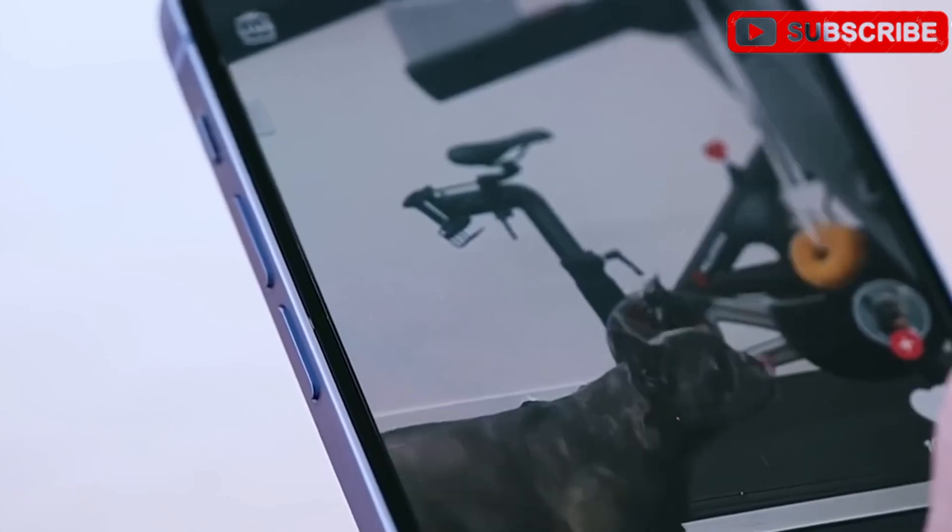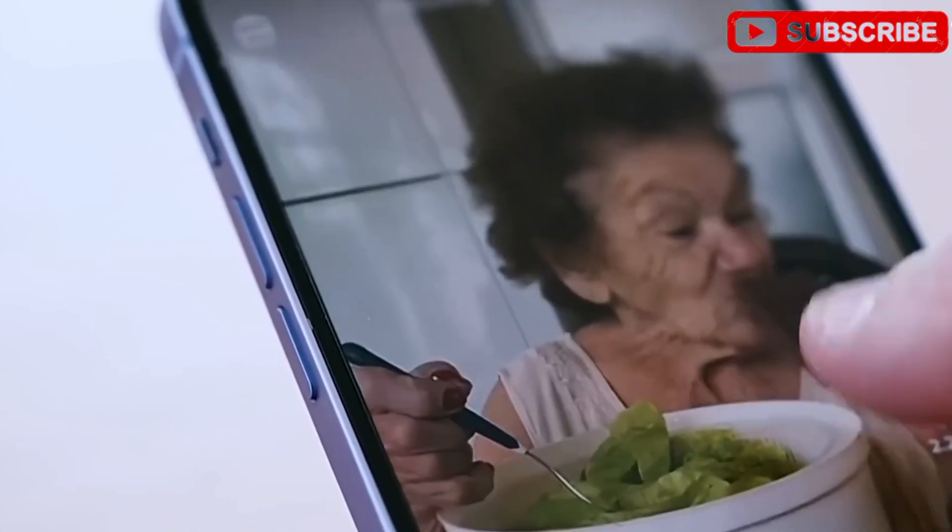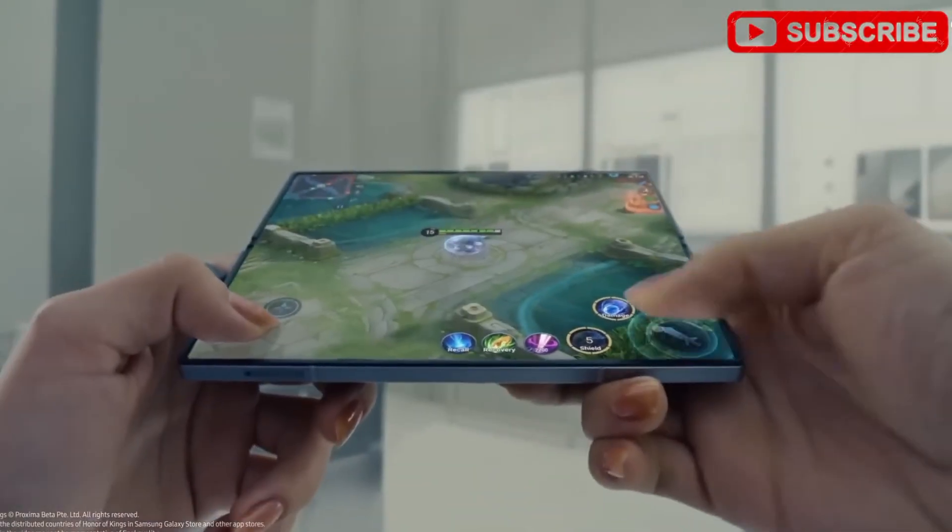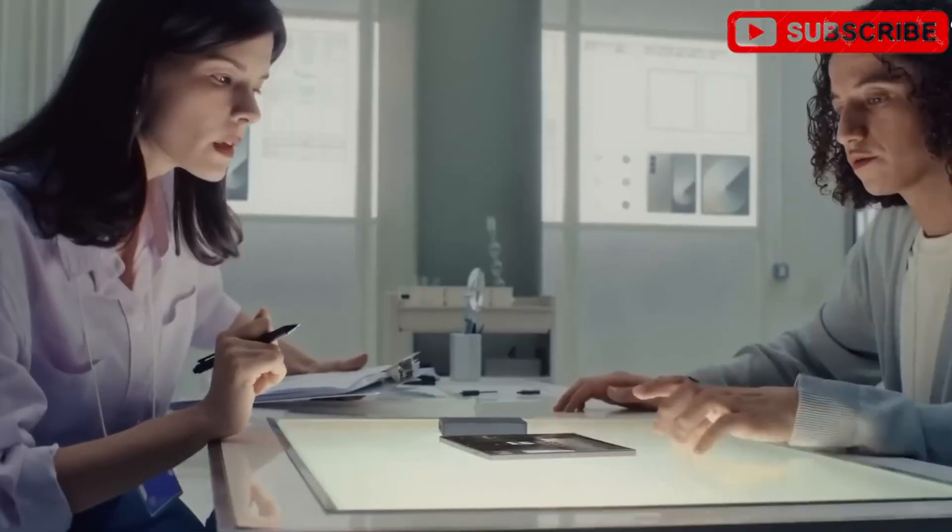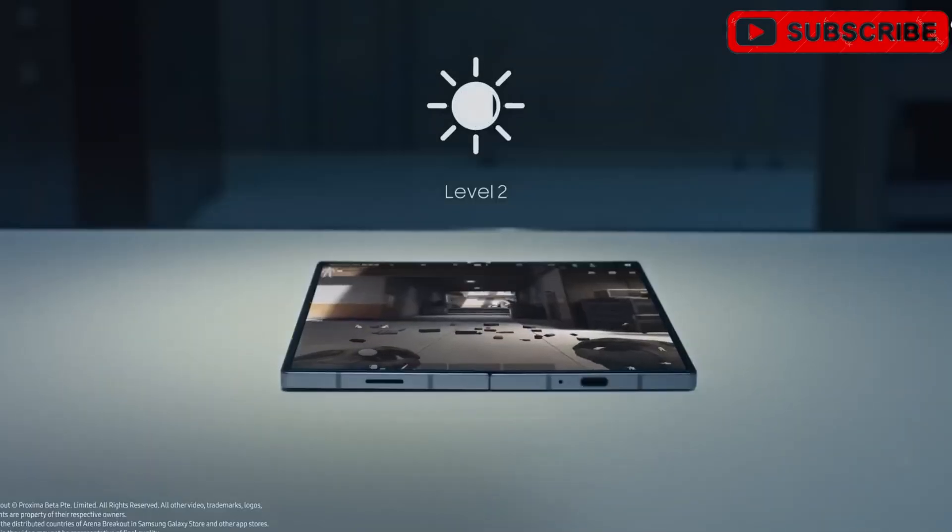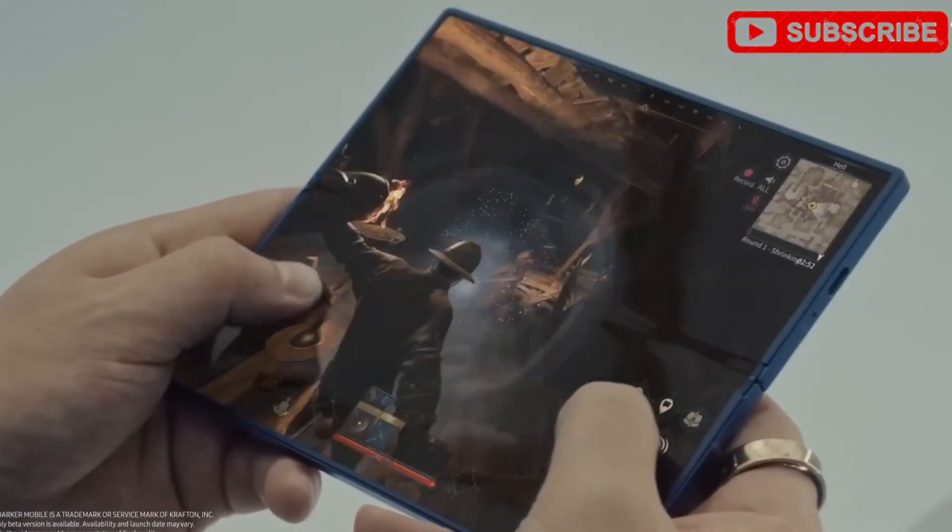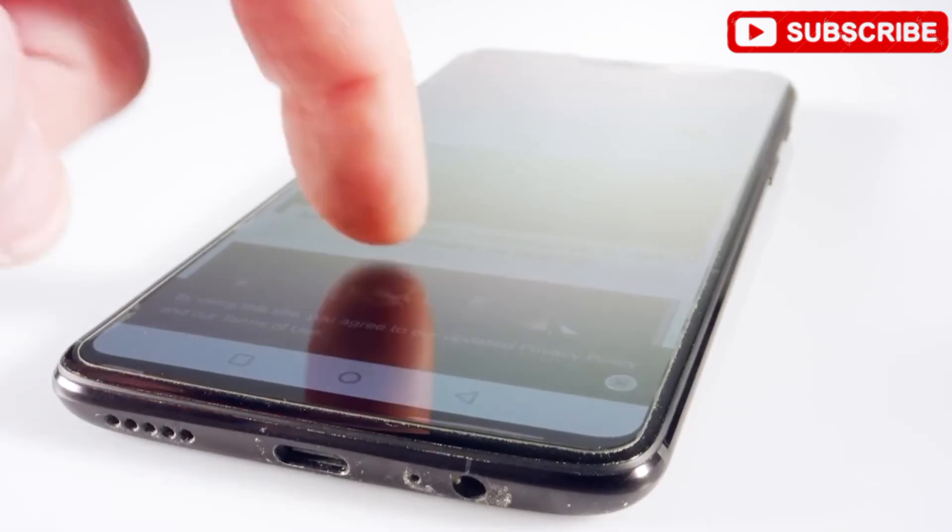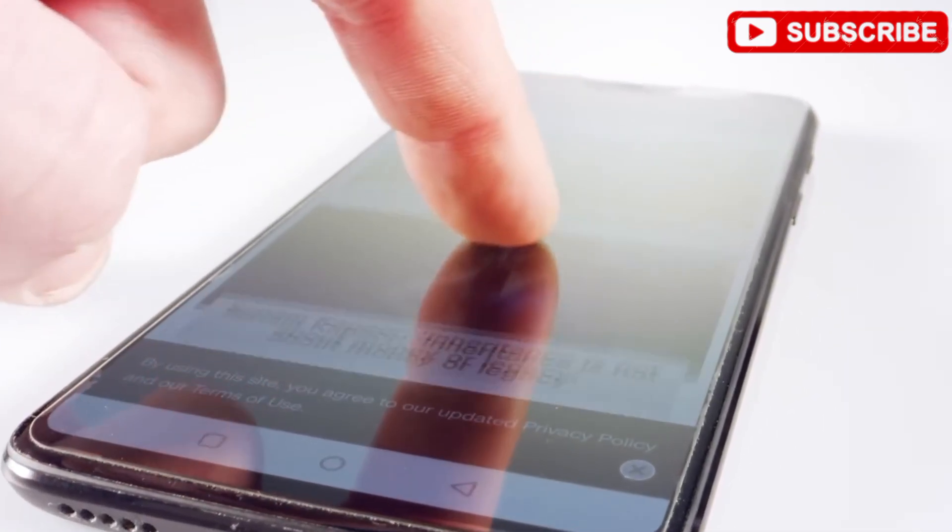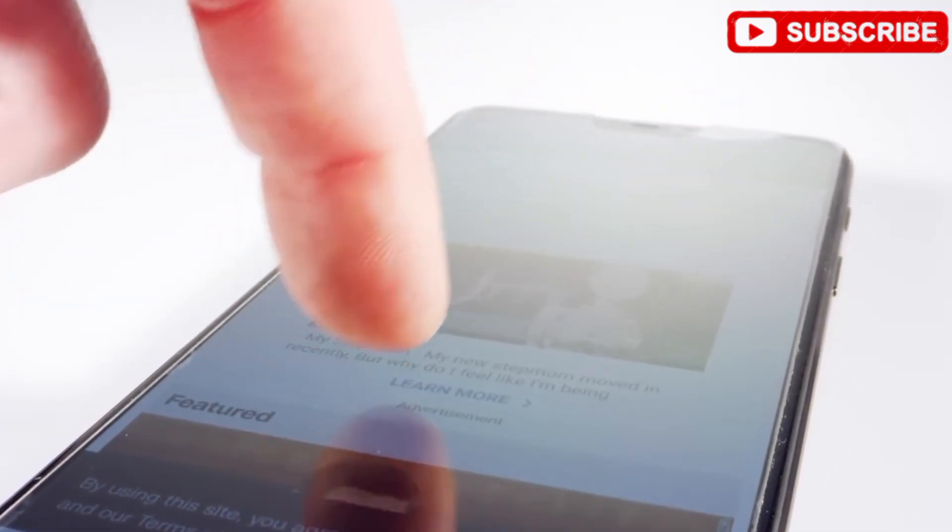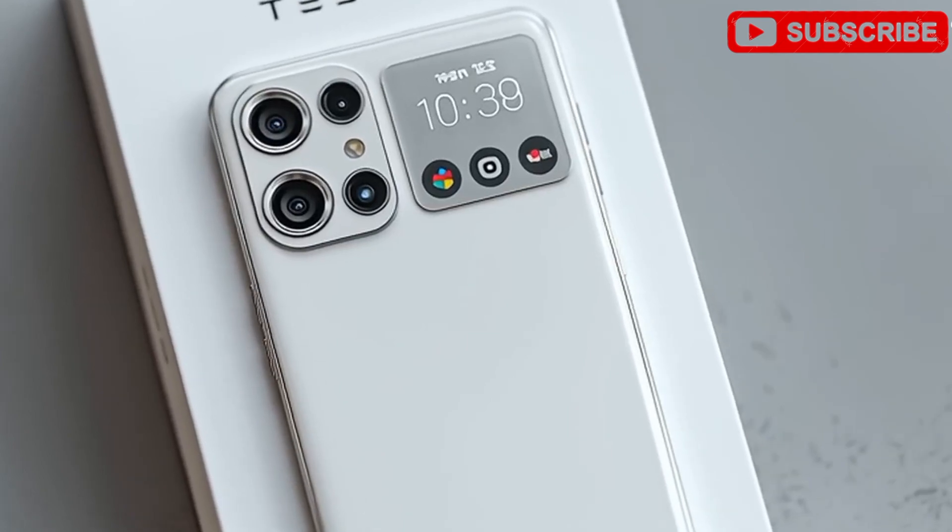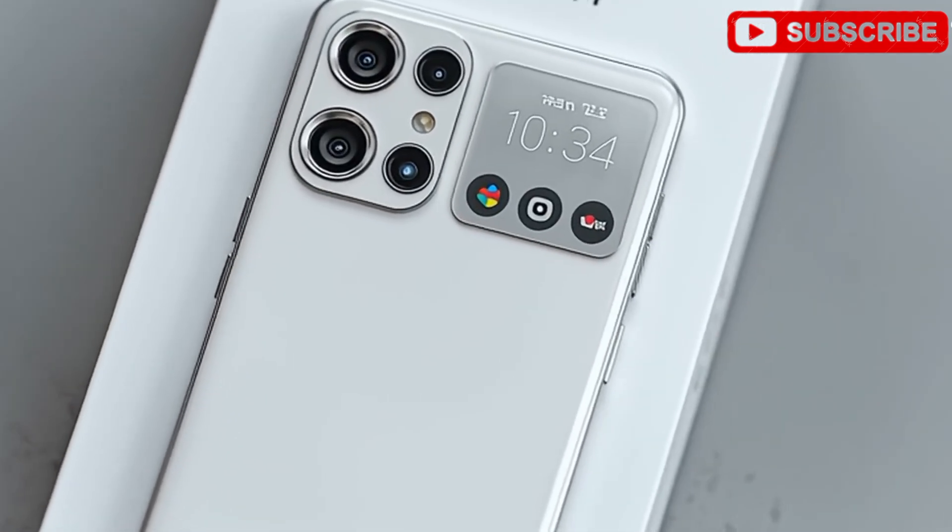The 6.9-inch AMOLED display, matching the iPhone 16 Pro Max's size, is protected by nano-shield glass, 25% more crack-resistant than Apple's ceramic shield. Rumors suggest it could hit 4K resolution, delivering vibrant colors and sharp visuals for movies, gaming, or scrolling through social media. Rounded edges and a smart grip sensor add comfort and practicality, vibrating to alert you if the phone slips, a feature especially helpful for older users or anyone prone to drops.